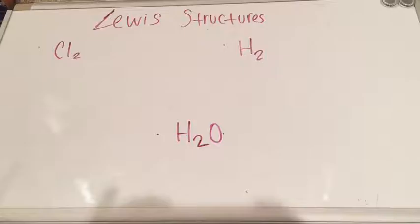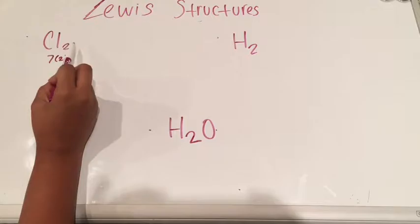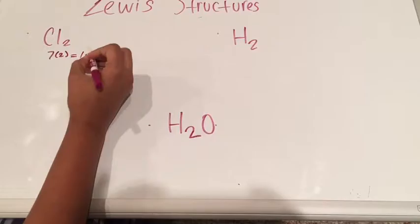Hey y'all, it's Danielle, and today I'm going to be showing you guys how to do Lewis structures. The first thing you do when doing a Lewis structure is figure out how many electrons will be in the valence of that element.